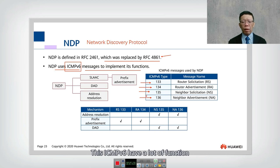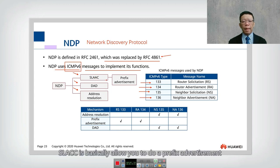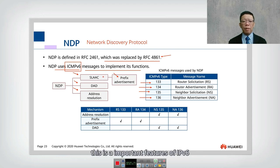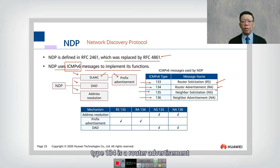ICMPv6 has many functions through NDP, allowing you to perform stateless address auto-configuration, duplicate address detection, and address resolution which is similar to ARP. SLAAC allows prefix advertisement, similar conceptually to how prefixes are distributed, but stateless. Let's look into the NDP ICMPv6 types in more detail. ICMPv6 type 133 is Router Solicitation (RS) and type 134 is Router Advertisement (RA).